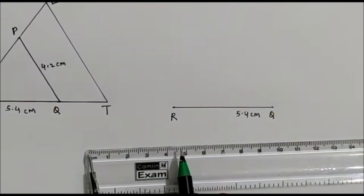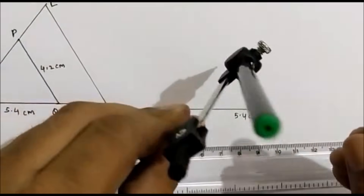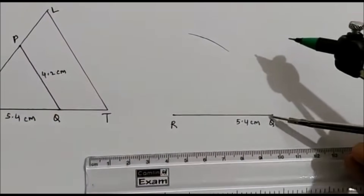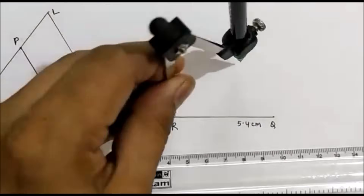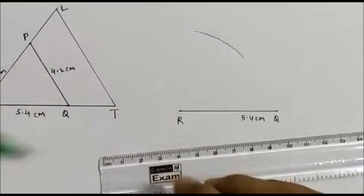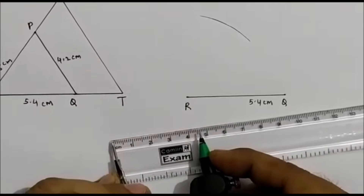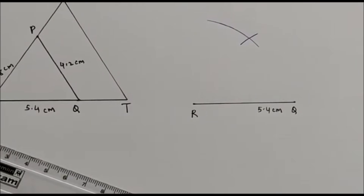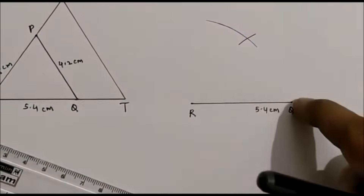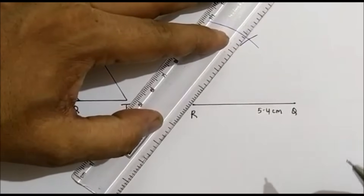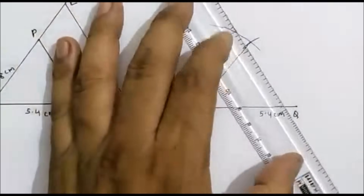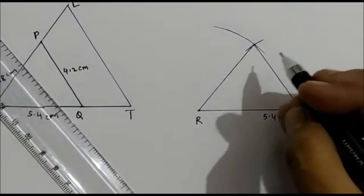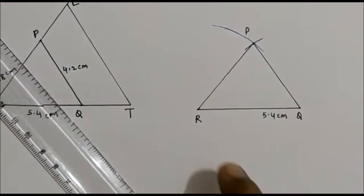We have taken 4.8 cm; from point R cut an arc of 4.8. Then take 4.2 cm and from point Q cut an arc of 4.2. From here 4.8 and from here 4.2 — join this intersection. We have got triangle PQR.